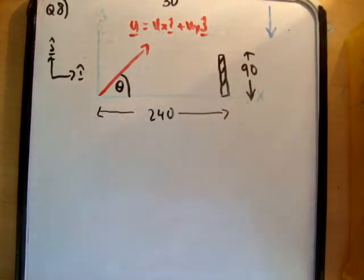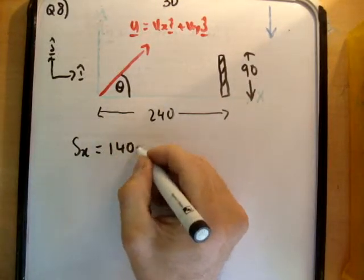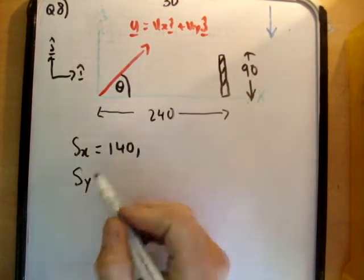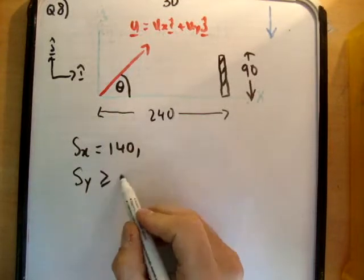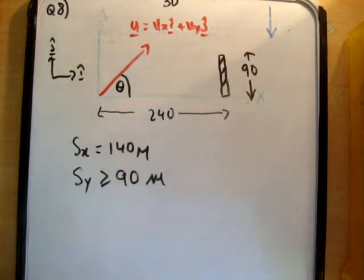So what do we need to work out here? We need the constraints that we need to use here is that when s sub x is equal to 240 that s sub y is greater than or equal to 90 meters. That's pretty straightforward. And I like this question as well because this is something real. If you want to kick a ball over a wall, well then you need to do this calculation in your head.